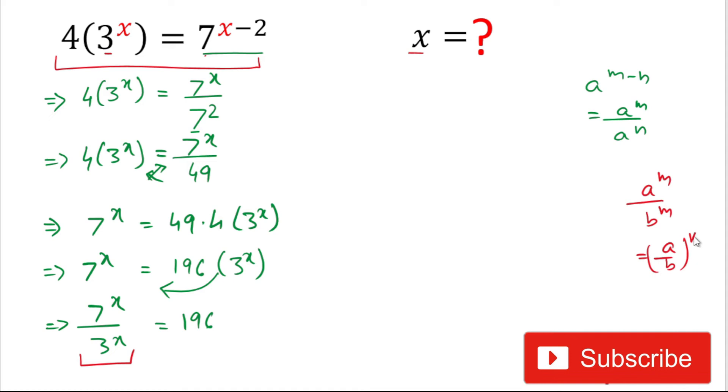Likewise we'll write it here. We can write 7 by 3, whole to the power x, equals 196. So friend, hope till here everything is clear.